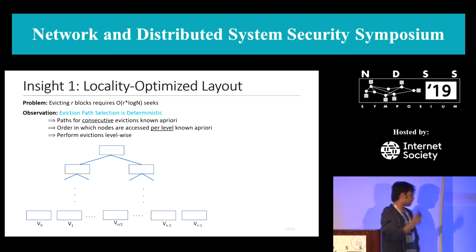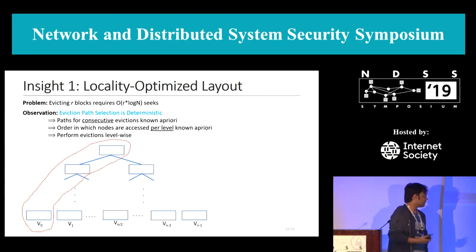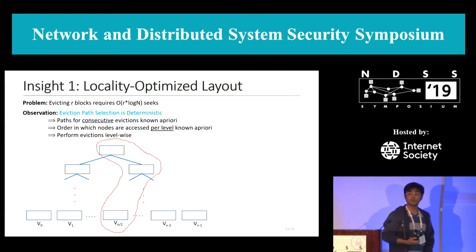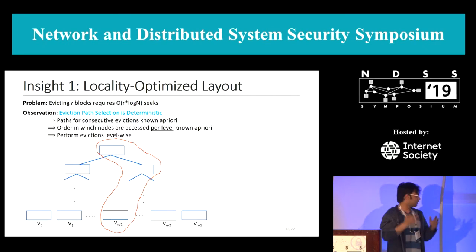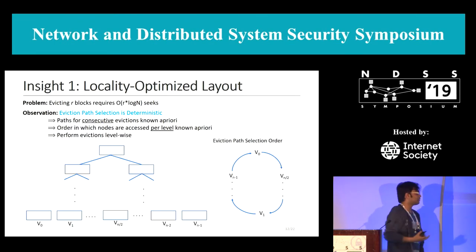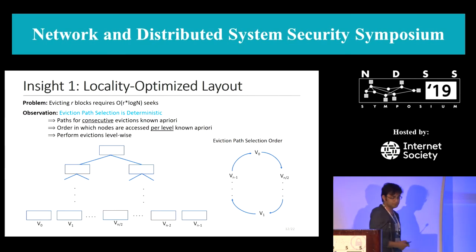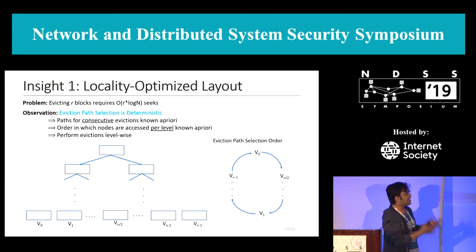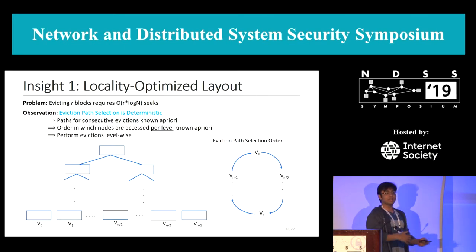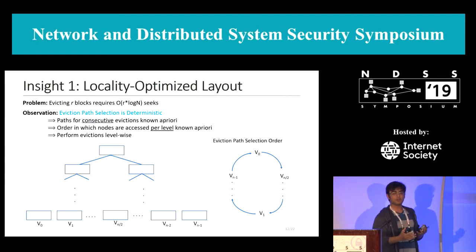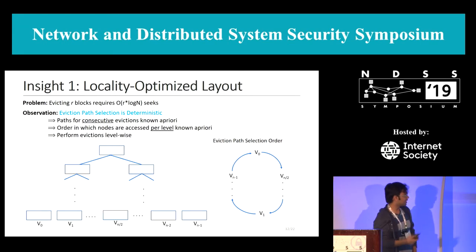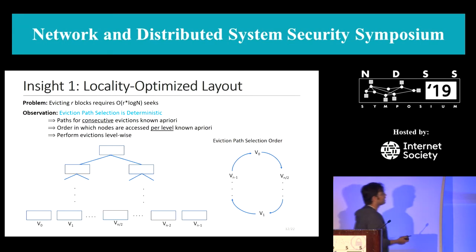Consider a tree with n leaves. The first eviction goes to the first path. The next eviction always goes to path V_{n/2}, which ensures two consecutive paths have minimum overlap. If you continue this process, you end up with a cyclic path selection order — once you evict to path V_{n-1}, you start again from V_0. Given this deterministic path selection order, we want to store the tree on disk such that when performing multiple evictions together, we incur the fewest seeks possible.